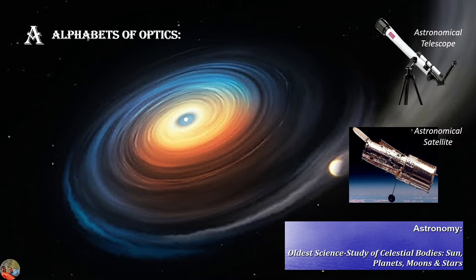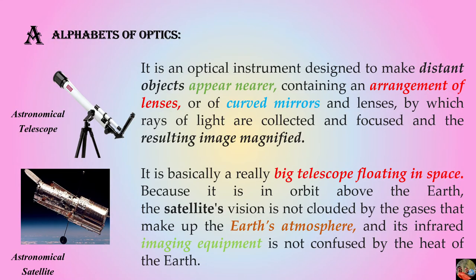Astronomical scientists use two key instruments: the astronomical telescope and the astronomical satellite. An astronomical telescope is an optical instrument designed to make distant objects appear nearer. It is a small instrument through which objects far away from the naked eye can be seen very closely as small particles. It contains an arrangement of lenses and curved mirrors that focus and magnify light rays to form an image visible to the naked eye.